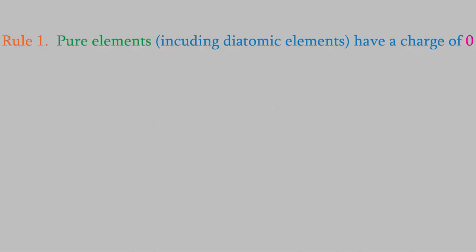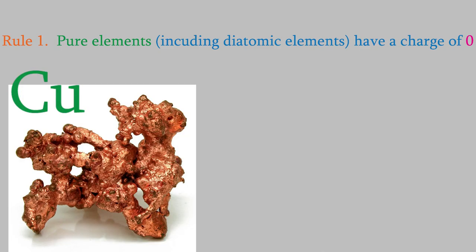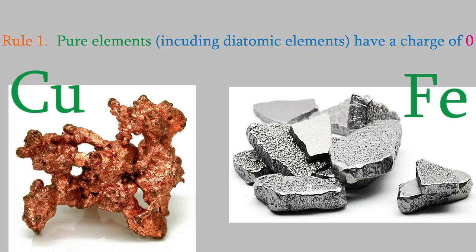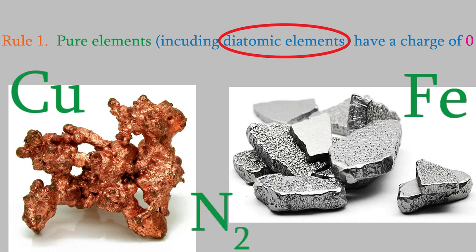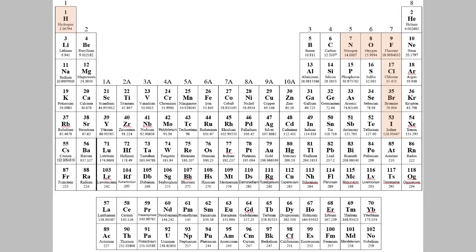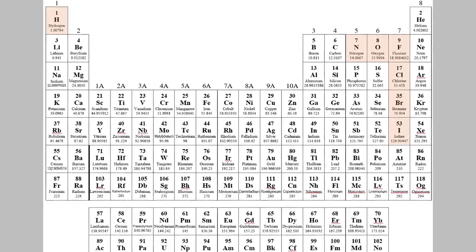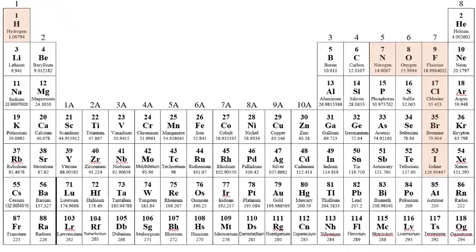The first rule is that any pure element has a charge of zero. So, for example, in a pure piece of copper or iron, the atoms have a charge of zero. That's also true for diatomic elements. For example, nitrogen gas is a diatomic element, N2, and the nitrogen atoms in this case must have a charge of zero. You might remember that in a much earlier video, I showed you that there are seven diatomic elements to know about. If you've forgotten them, now would be a good time to review that list.